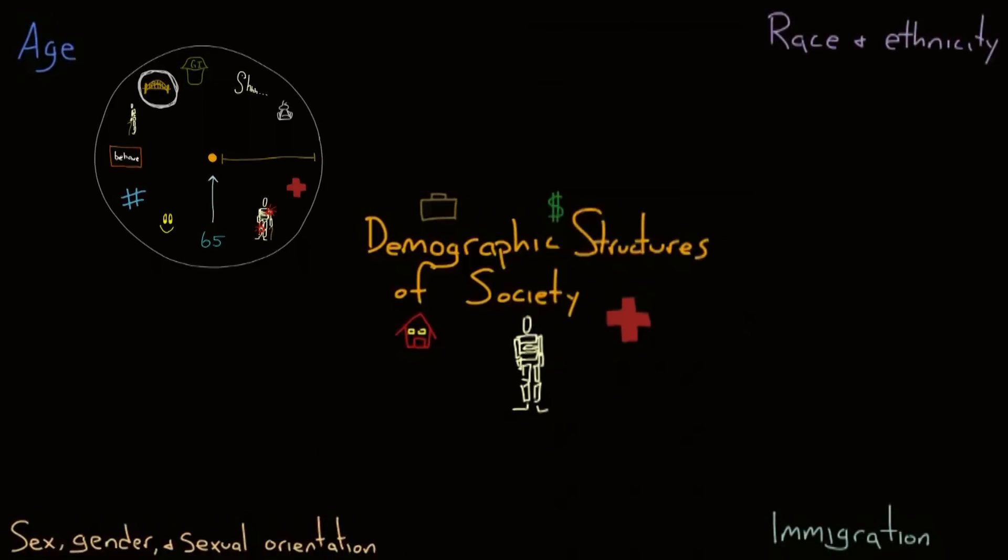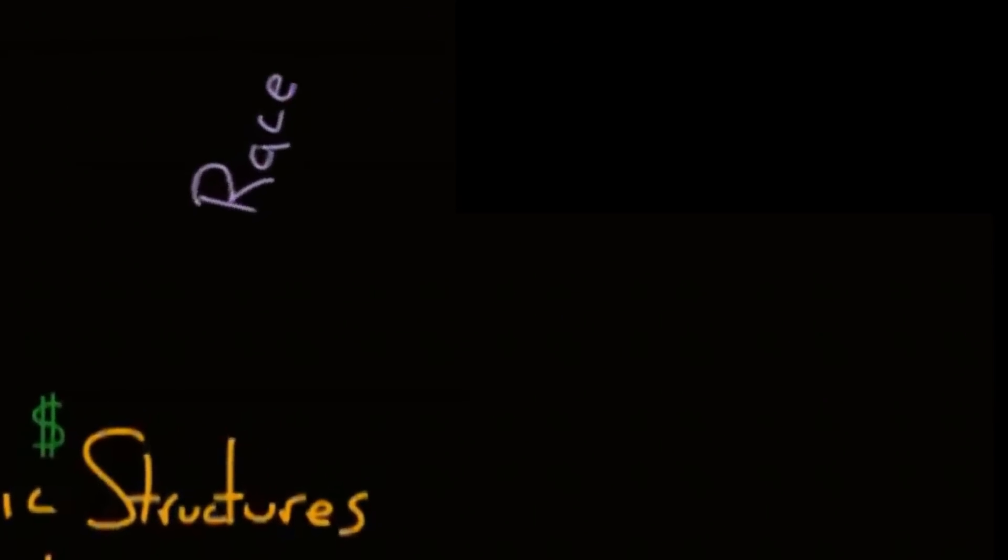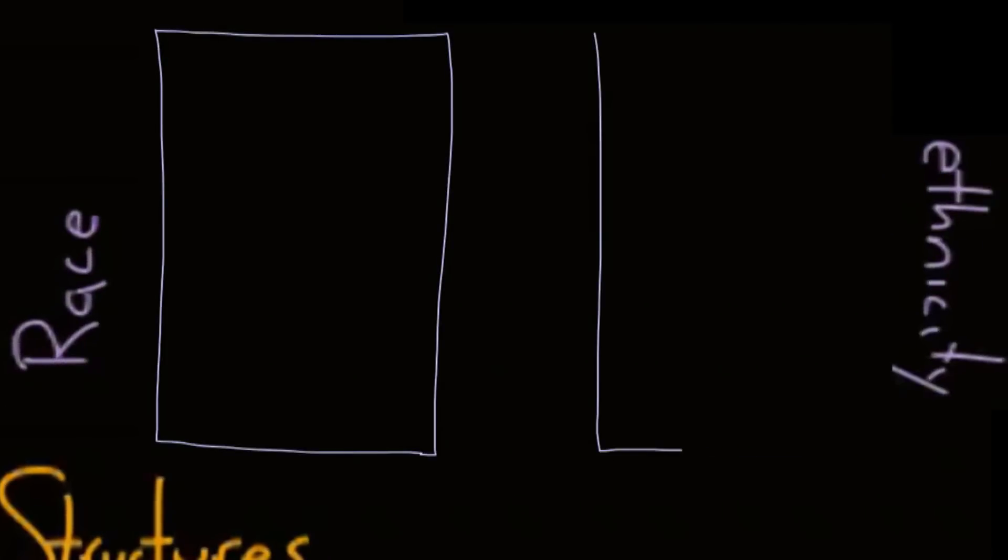When looking at statistics, we more commonly categorize people into races and ethnicities. Race is a social construction that puts people into groups based on observed or perceived differences in physical traits.